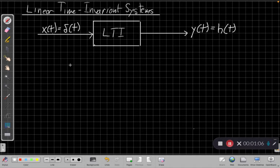The main idea behind this is that we can build any input, X of T, not just the special case with delta of T going in, but for any input, we can build it out of delta of T's through a combination of shifting, scaling, and summing, or superposition. We can do the same shift, scale, and superposition of copies of H of T to get the output.